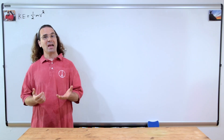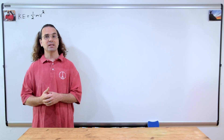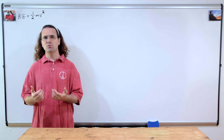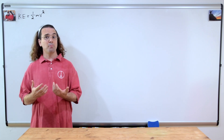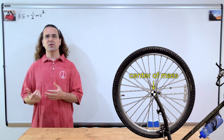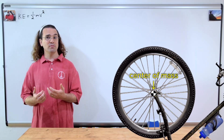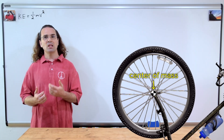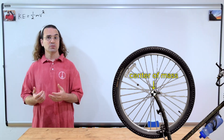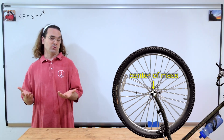Now let's say we have an object that is rotating around its center of mass, but its center of mass is not moving, like a bike wheel on an upside-down bicycle. The center of mass of the bike wheel is not moving, so the velocity of the center of mass of the wheel is zero, so the wheel has zero kinetic energy, right? That does not make sense to me.